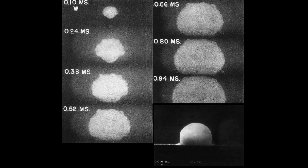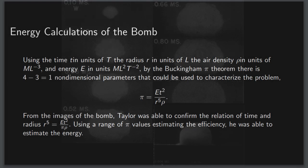So using the time t, the radius r, the air density rho, and energy E, he used the Buckingham Pi theorem to conclude that there was one non-dimensional parameter that characterized the efficiency of the blast. The images confirmed that the radius and time had a two-fifths power law between each other. Assuming that the density was constant, and with some guesswork of the efficiency of the bomb, he was able to estimate that it released between 16 and 24 kilotons of TNT, with the accepted but classified 20 kiloton value right in the middle.